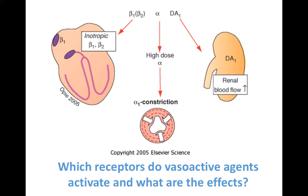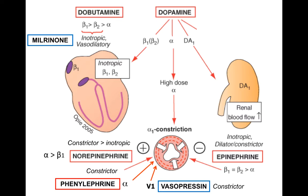Thinking about which drugs activate which receptors: agents that act primarily as inotropes — increasing contractility and heart rate — are agents like dobutamine, which acts mostly through beta-1 receptors. Because of its beta-2 effects, it also has vasodilatory actions. Milrinone is another vasodilator we'll discuss that has the same net effects of inotropy and vasodilation, but through a different mechanism of action.